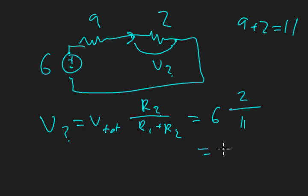So that's 11 down here. This is going to be 6 times 2 over 11, which is 12 over 11. We put that into a calculator and get the same result: 1.09 volts.